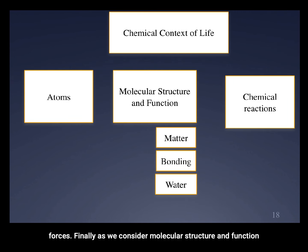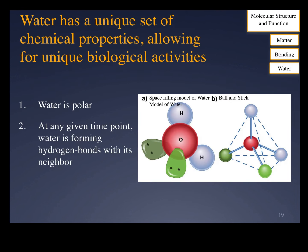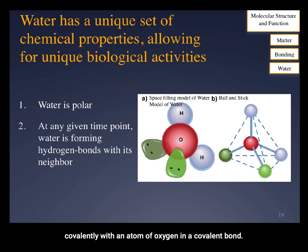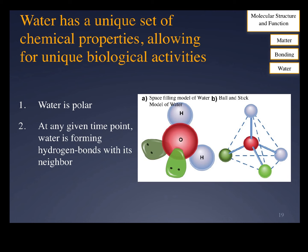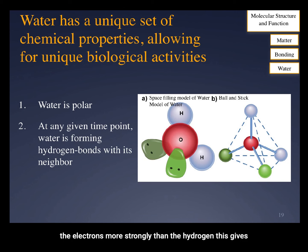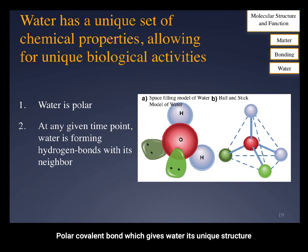Finally, as we consider molecular structure and function, we want to discuss the properties of water. A water molecule is formed when two atoms of hydrogen bond covalently with an atom of oxygen. In a covalent bond, a pair of electrons are shared between the atoms. In water, the sharing is not equal, so this is a polar covalent bond. The oxygen atom attracts the electrons more strongly than the hydrogen, giving water an asymmetrical distribution of charge. Because of its polar covalent bond and unique structure, water has unique properties that are necessary for life.